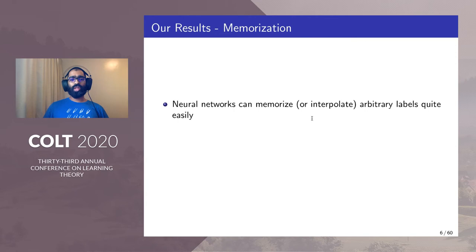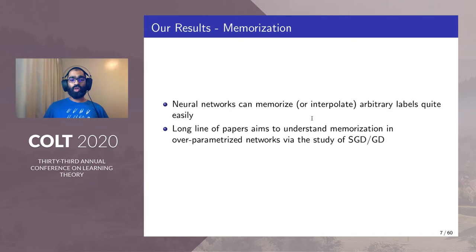We know that neural networks can memorize or interpolate arbitrary labels quite easily. A long line of papers aim to understand memorization in over-parameterized networks via stochastic gradient descent.